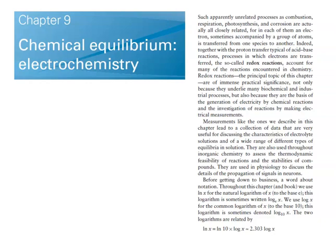Such apparently unrelated processes as combustion, respiration, photosynthesis, and corrosion are actually all closely related. In each of them, an electron, sometimes accompanied by a group of atoms, is transferred from one species to another. Together with the proton transfer typical of acid-base reactions, processes in which electrons are transferred — the so-called redox reactions — account for many of the reactions encountered in chemistry.